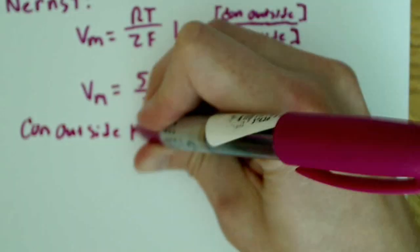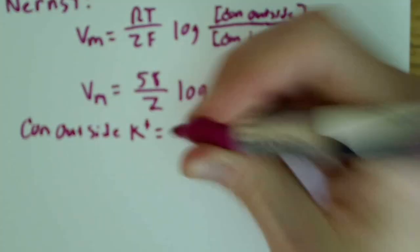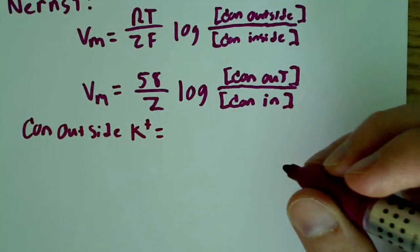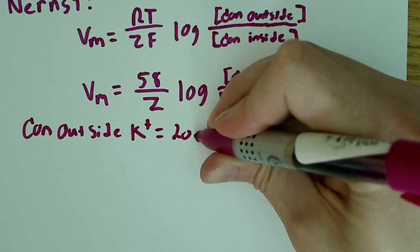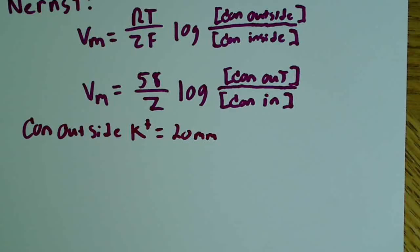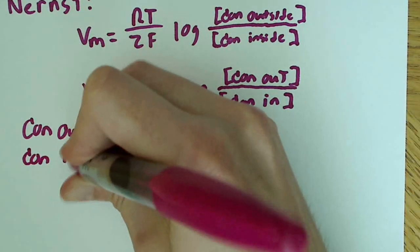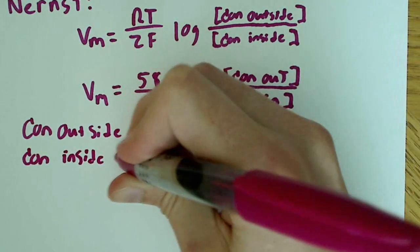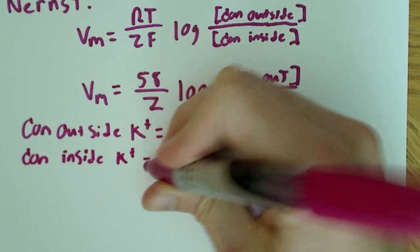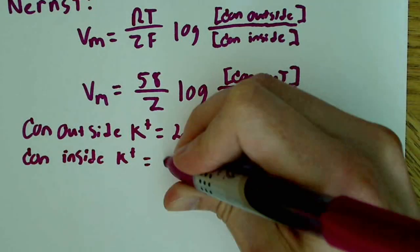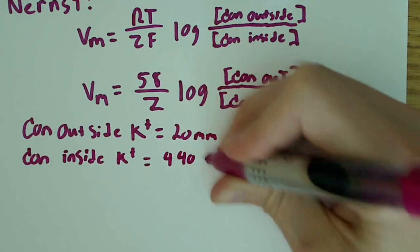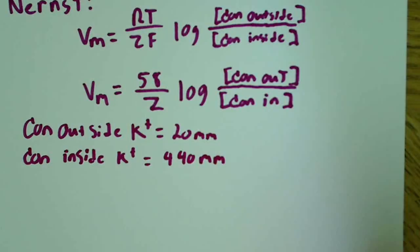Let's say the concentration outside of K plus, so we'll do potassium here, concentration outside is equal to 20 millimoles. And the concentration inside K plus is equal to 440 millimoles.